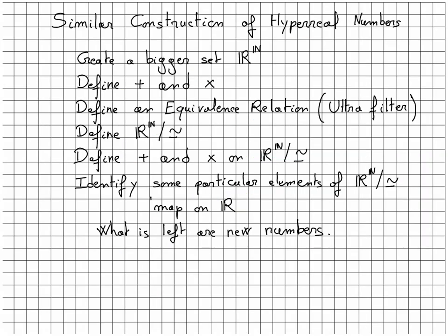The construction of hyperreal numbers will be very similar. We will start by creating a bigger set on which we define addition and multiplication. Step three is defining the equivalence relation. This is the most challenging part and will require us to investigate what are ultrafilters. Then the following steps are a real walk in the park. We will finish by identifying some particular elements of the partitions, showing that they map on the real line. And elements that will be left will be new numbers, the hyperreals.